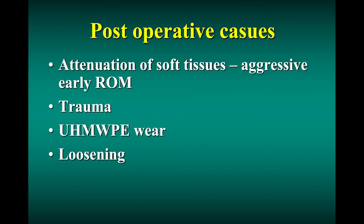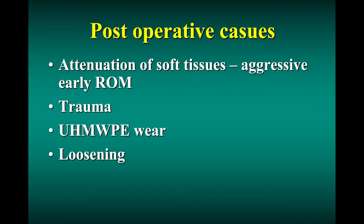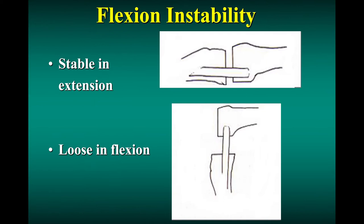Postoperatively, instability can also occur. Even though everything was done correctly at surgery — and you know this because if one of your patients comes in and they're unstable after surgery and you're the surgeon, you know it was done properly — they can still be unstable. Something happened post-op: the ligaments just kind of stretched out. There are clearly some patients who have a genetic predisposition to stretch out, just like some have a genetic predisposition to get stiff. Ehlers-Danlos and things like that we know about, but there are subtle variants we just don't know about until after surgery. The other causes — trauma and loosening — are a little more obvious.